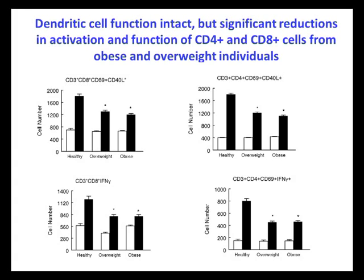In addition to the antibody responses, we also measured the ability of both CD8 and CD4 T-cells to respond to influenza stimulation. We took peripheral blood mononuclear cells from our healthy weight, overweight, and obese individuals and exposed them to influenza virus in vitro, and then used flow cytometry to measure activation markers like CD69 and CD40L, as well as functional markers like granzyme B and interferon. We found that both CD4 and CD8 T-cells from obese individuals were less able to activate upon exposure to influenza virus and were less able to function. And to our surprise, we also found similar defects in the ability of T-cells from overweight individuals in response to flu challenge as well.